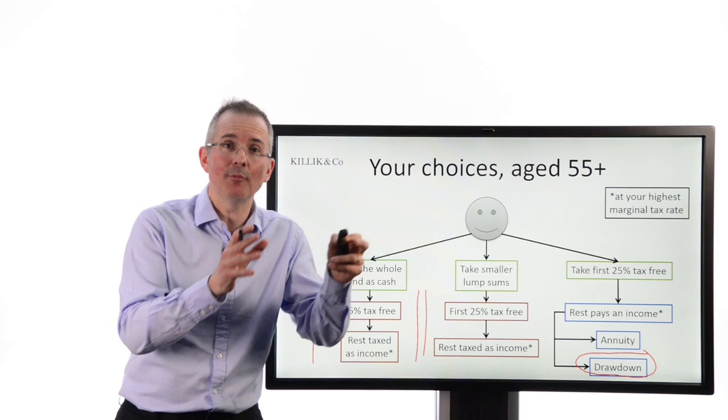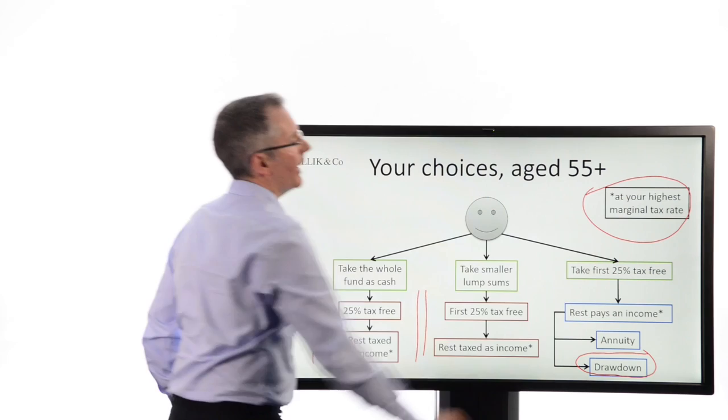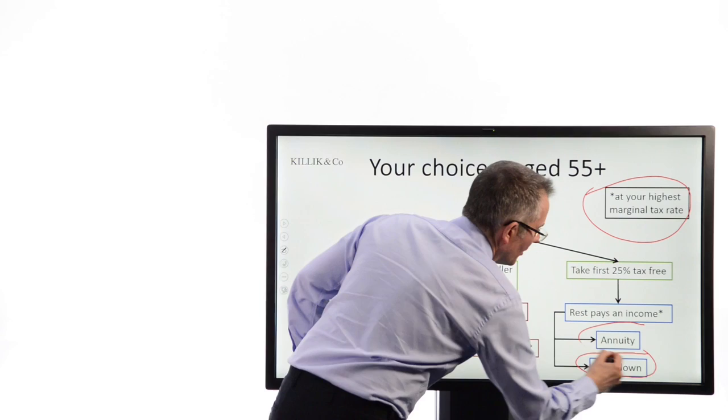But don't forget a couple of things. Number one, that means you are involved directly in the management of your subsequent portfolio. Investment returns, there's risk there. And number two, what you draw off beyond that first 25% tax-free will be taxed at your highest marginal income tax rate. And meanwhile, the press has dealt a fairly hefty blow to the poor old annuity.